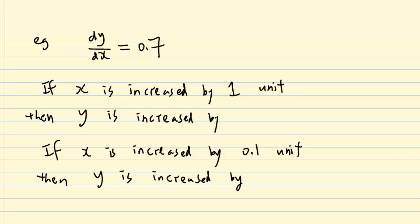Because the interpretation I gave earlier is no different from the interpretation of rate of change. For example, if I have dy/dx equal to 0.7, that means that if x is increased by 1 unit, then we expect y to be increased by 0.7 unit. If x is increased by 0.1, then y is expected to increase by 0.7 times 0.1 unit.